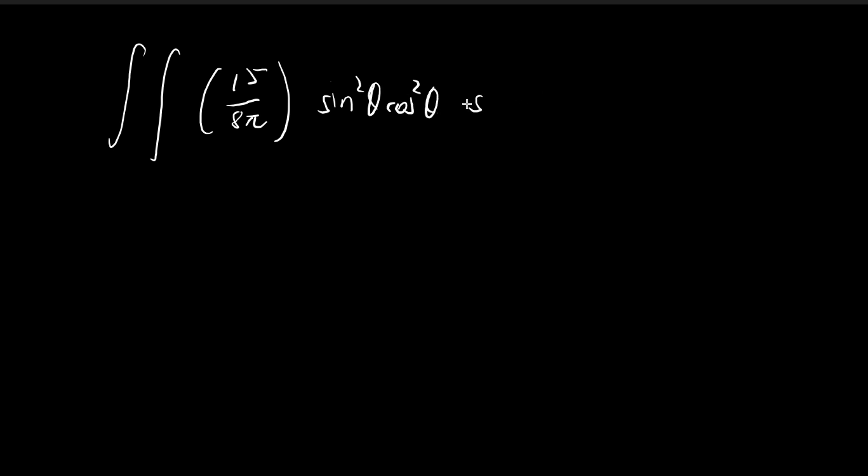And then you have sine square theta, cosine square theta. And then you multiply the differentials, which is sine theta, d theta, d phi. And then once again, theta goes from 0 to pi, and then phi goes from 0 to 2 pi, which draws out the entire spherical shell.